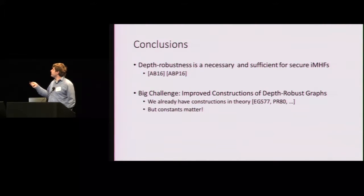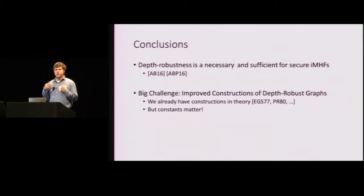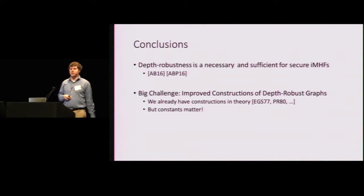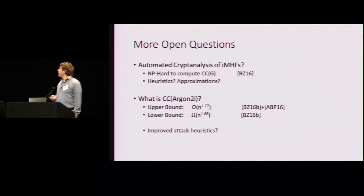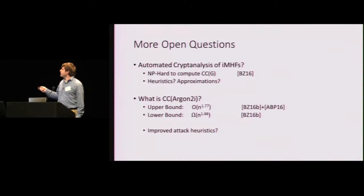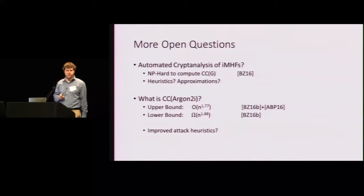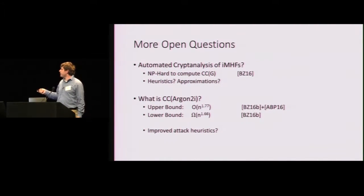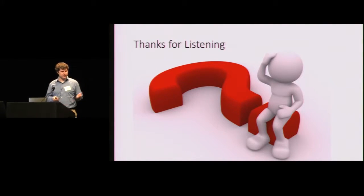All right. So in conclusion, depth robustness is necessary and sufficient for building secure IMHFs. I think the big challenge and one that I hope people will be motivated to work on is improved constructions of depth robust graphs. So the result in our paper really used a result of Erdos, Graham, and Semeretti from 77. They're combinatorialists. They weren't particularly concerned with practical efficiency. But in this case, constants obviously matter a great deal. More open questions. I think it would be cool to automate the cryptanalysis of IMHFs. Unfortunately, we have some results that suggest this may not be possible. It's NP-hard to compute CC of G, but we can't rule out heuristic approximation algorithms. And of course, there's still room for a tighter analysis of the latest version of Argon-2i. There's a gap between the lower bound and the upper bound. So with that, I'll think. Thanks for listening.